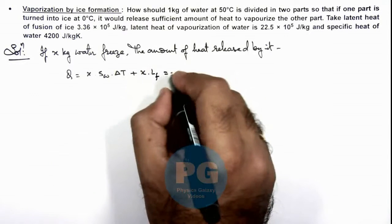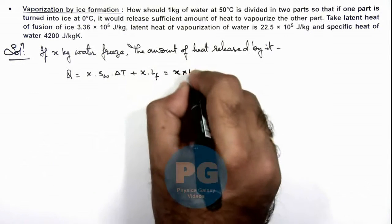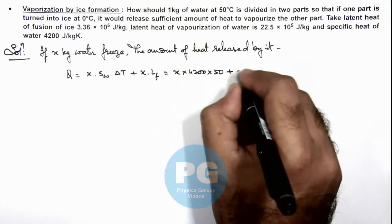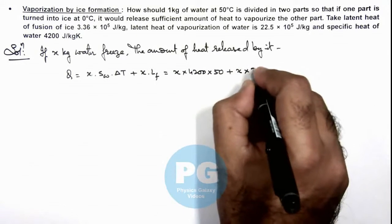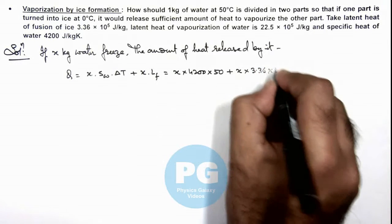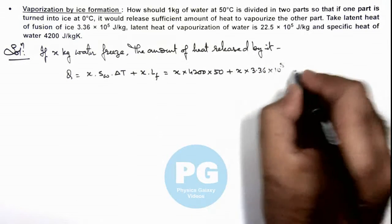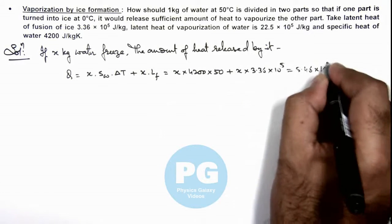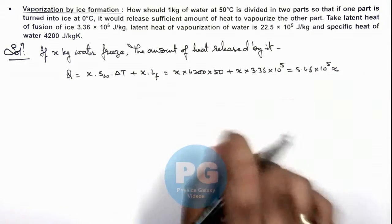If we substitute the values, this is x multiplied by 4200 multiplied by 50 plus x multiplied by 3.36 into 10 to power 5, which gives us 5.46 into 10 to power 5 times x. This much amount of heat is released.